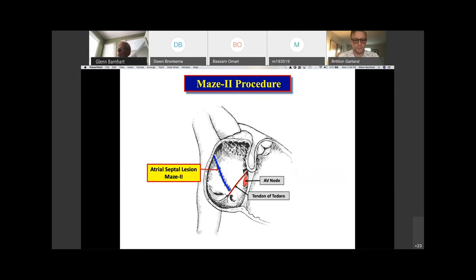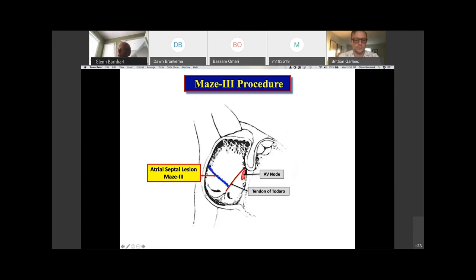In the maze two procedure, that line was moved a bit more posteriorly, as you can see. And the upper end of the septal lesion terminated at the SVC. The maze three procedure took that line even further back here, and it was really posterior to the orifice. The maze two was up here, and maze three took it back here.